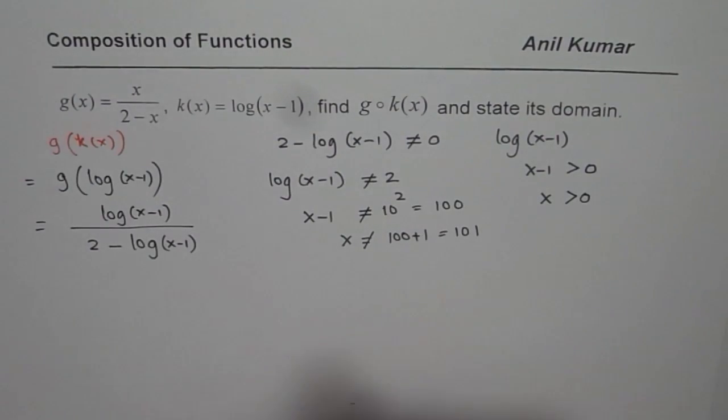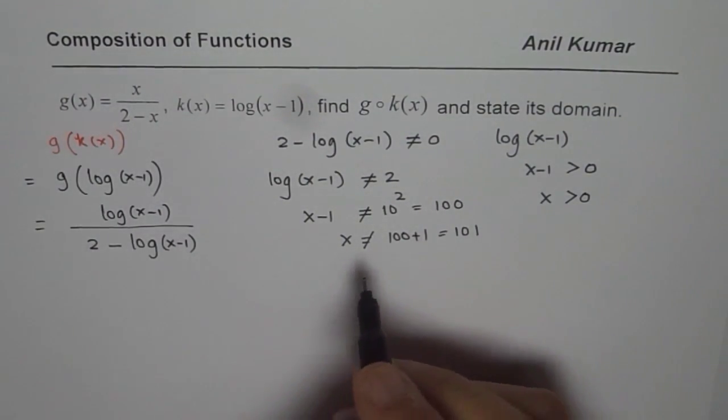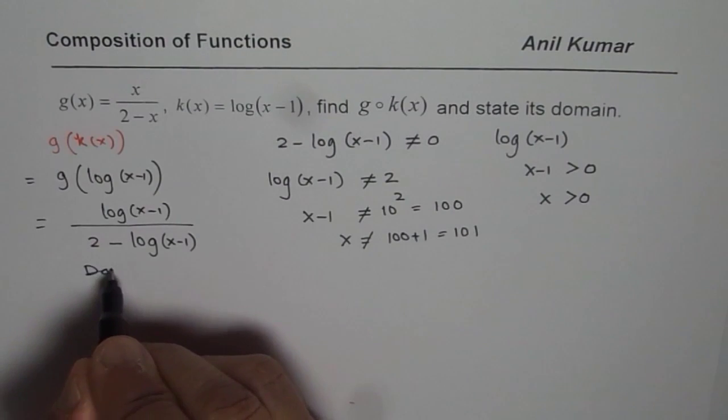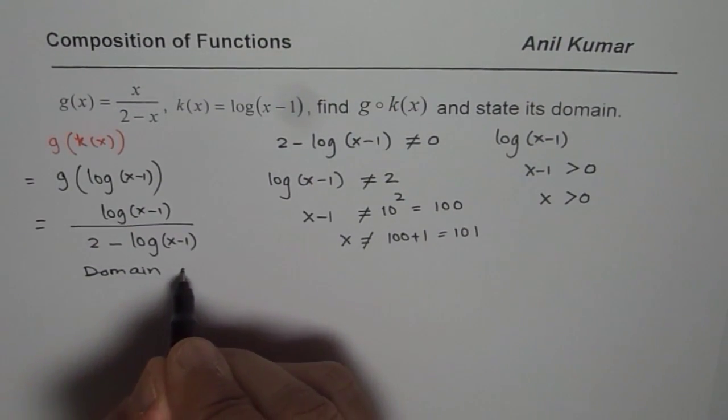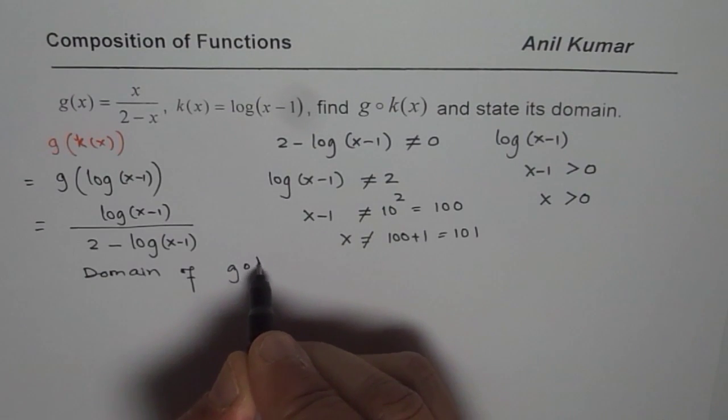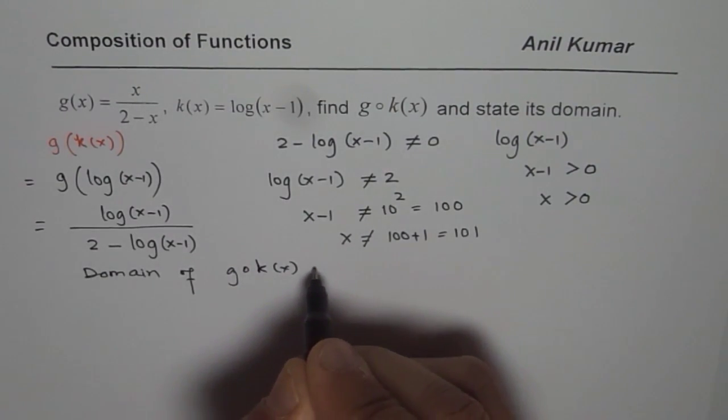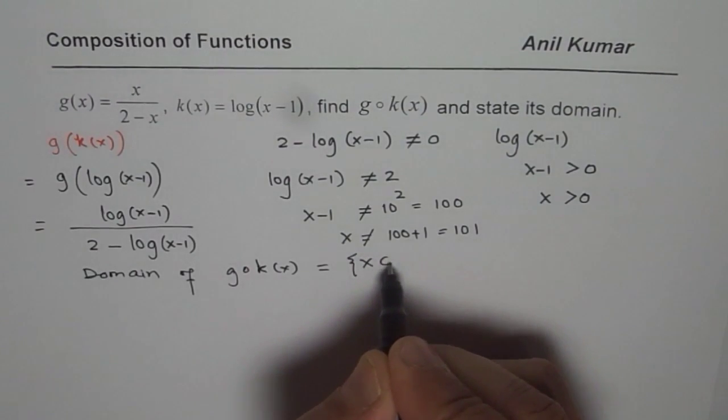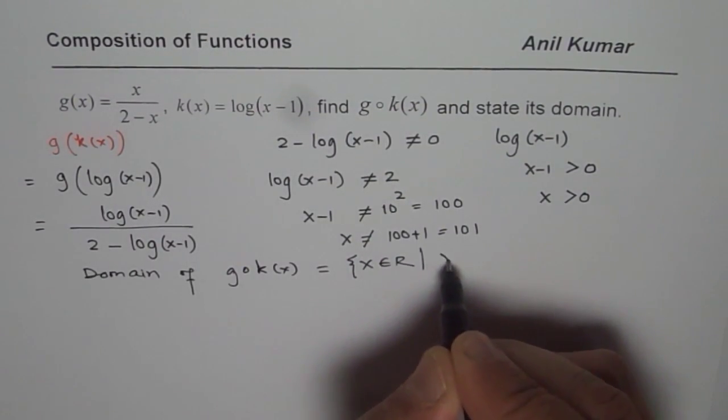With all this, now you can write the domain of the function. So we say domain of g(k(x)) is equal to x belongs to real numbers where x is greater than 0.